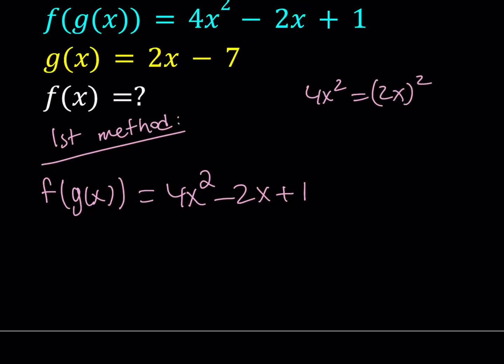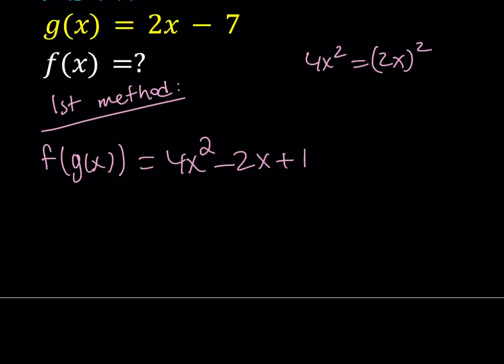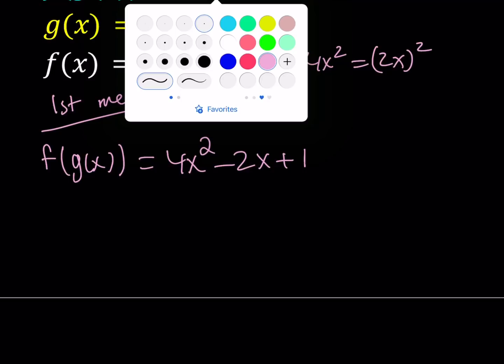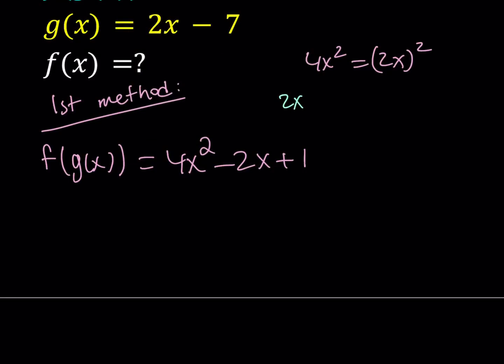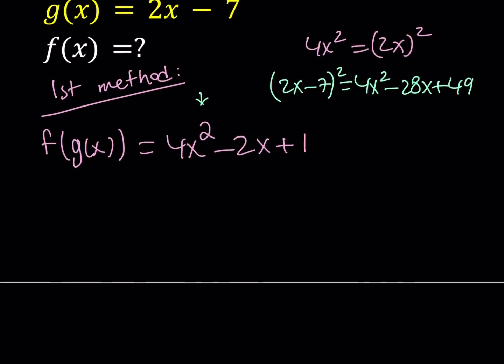So, I can basically take 2x minus 7 and just square it. Let's see what happens if I square 2x minus 7. 2x minus 7 squared, we can do that here. 2x minus 7 squared is 4x squared minus 28x plus 49. Now, notice that the expression that I'd like to manipulate has 4x squared but doesn't have negative 28x. But don't worry, we're going to fix that.